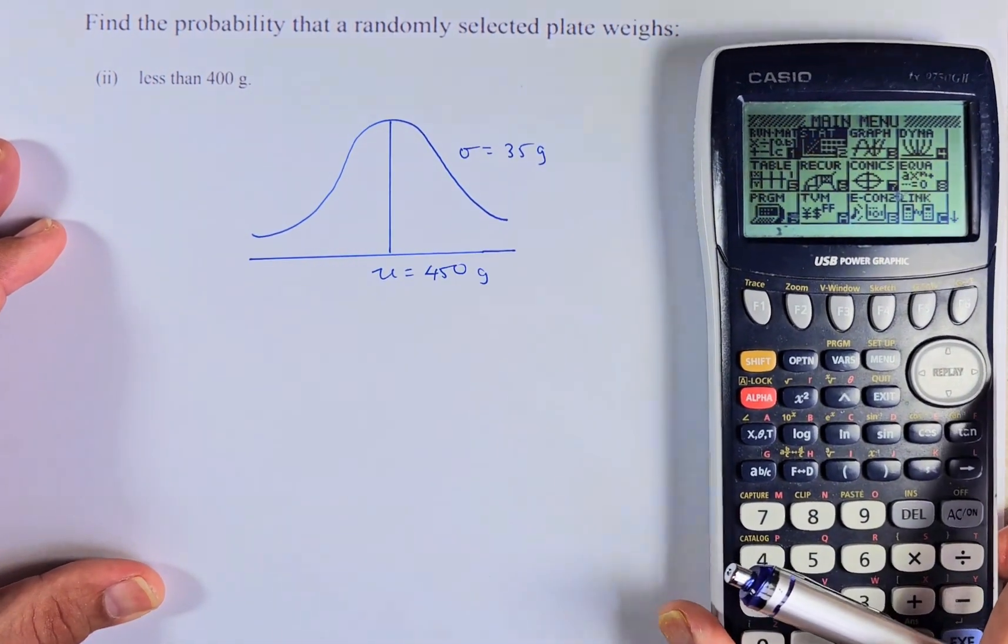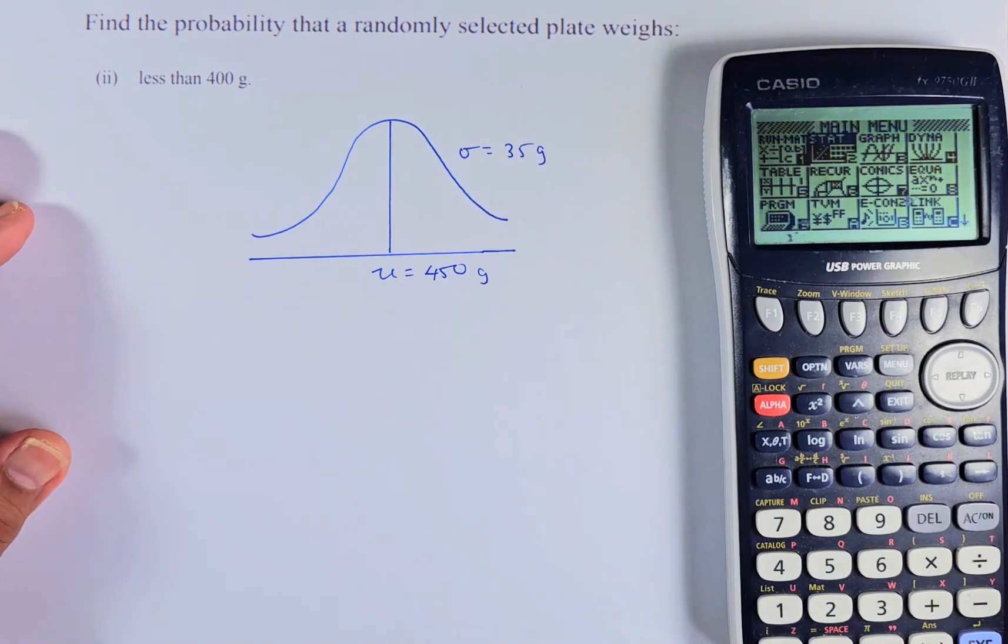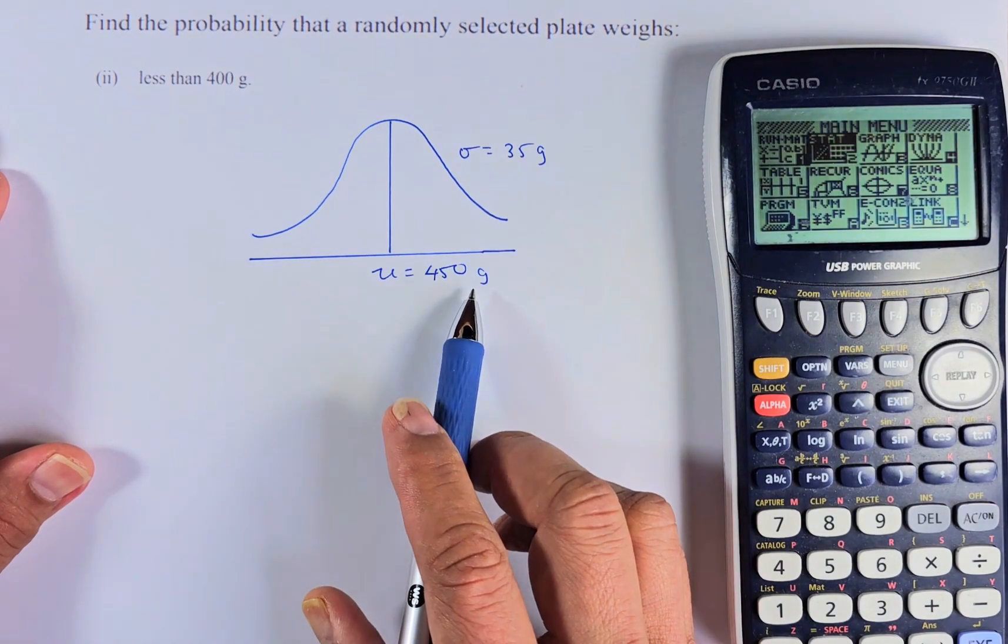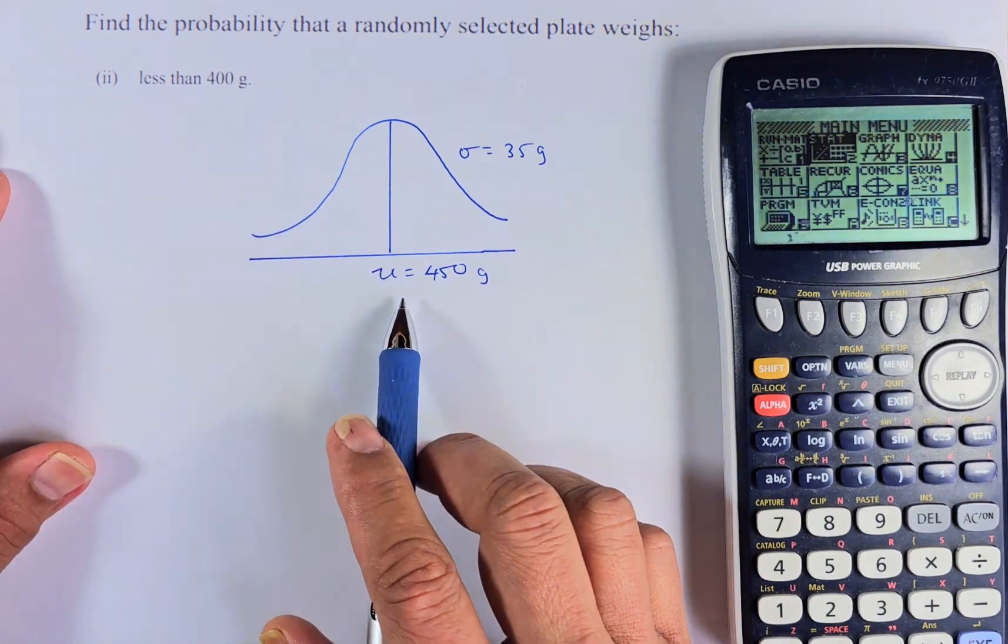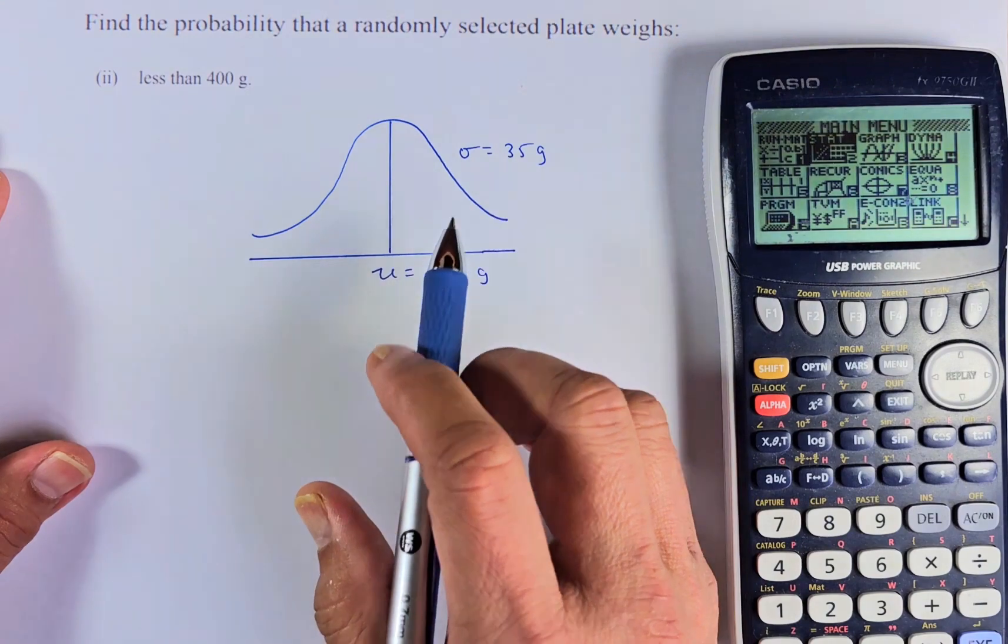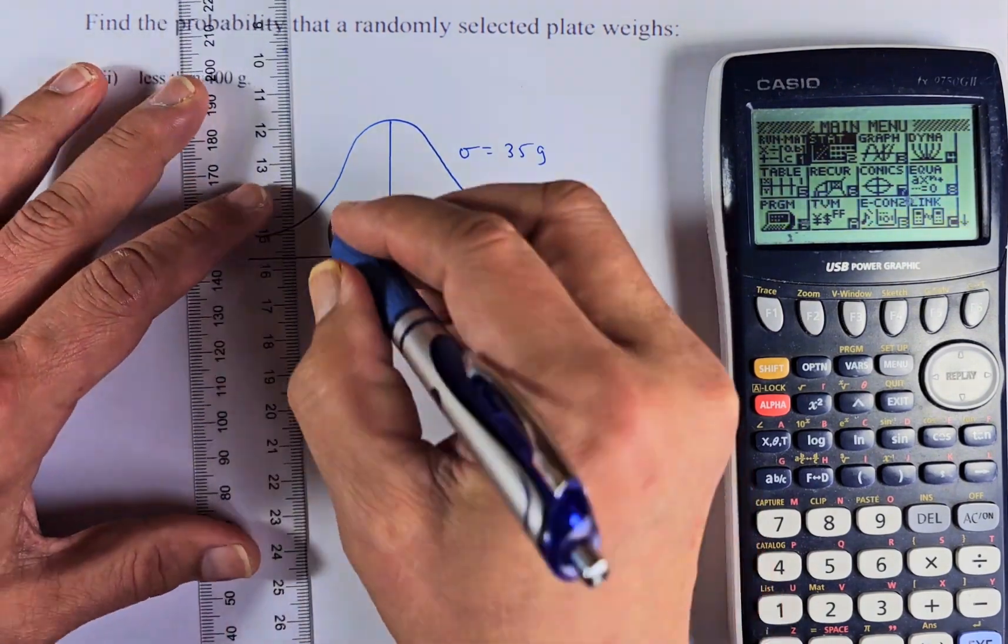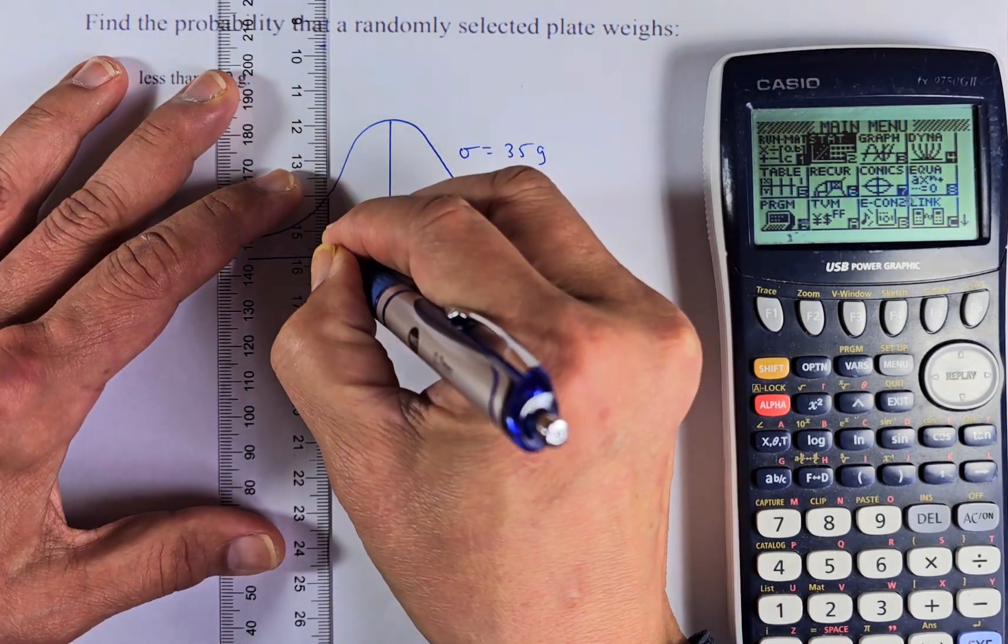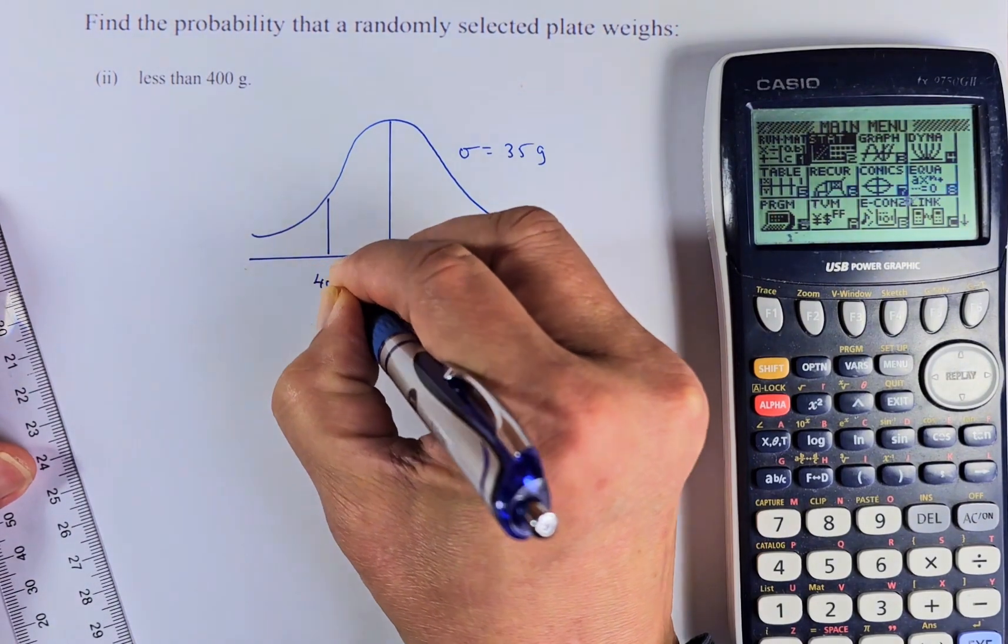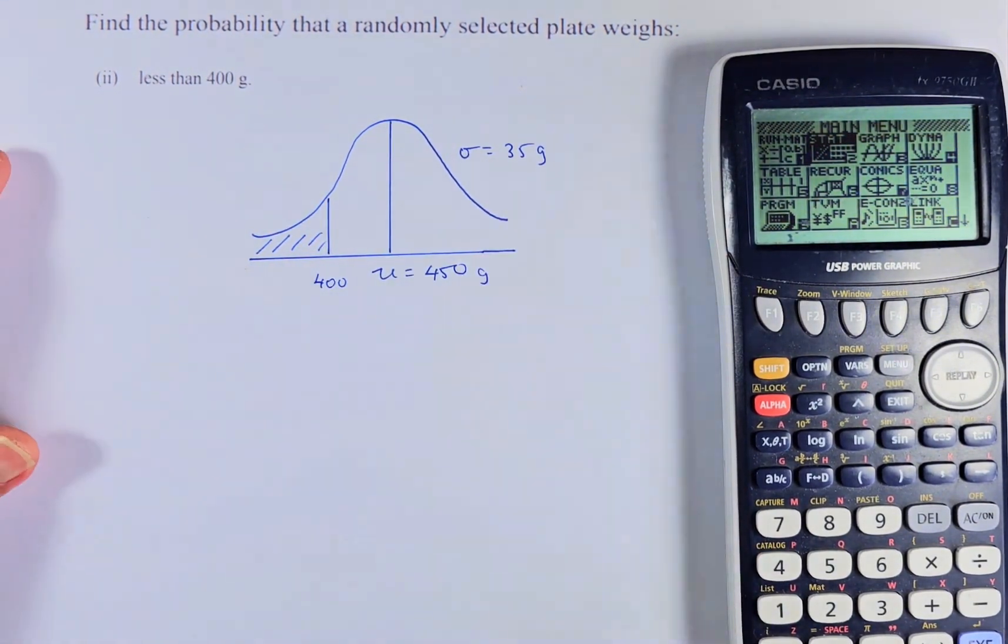The second question is the same. Find the probability that the randomly selected plate weighs less than 400. The mean is still 450. Sigma is 35 from the previous question. 400 has to be left of 450, so we're going to put 400 here. And then the area we are looking at is here.